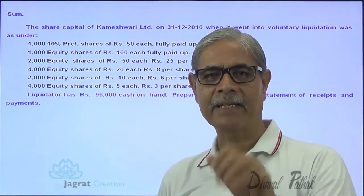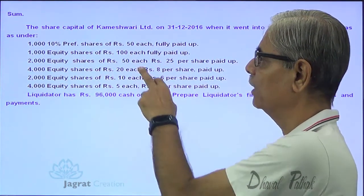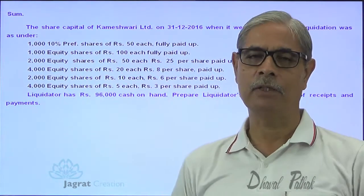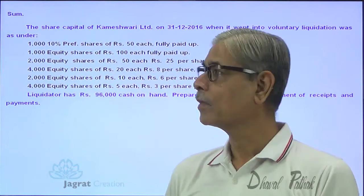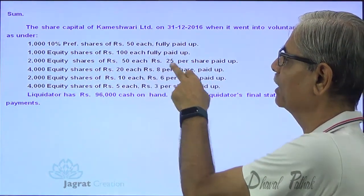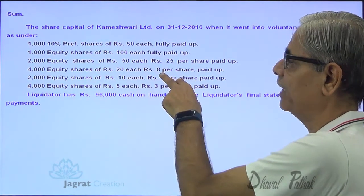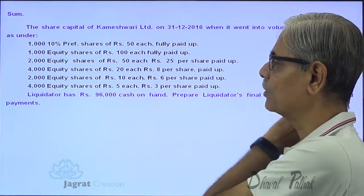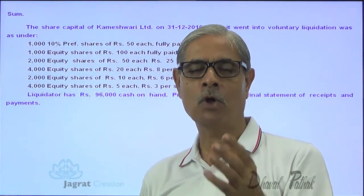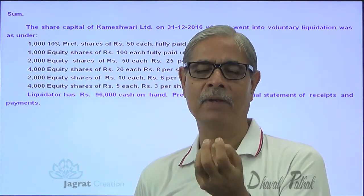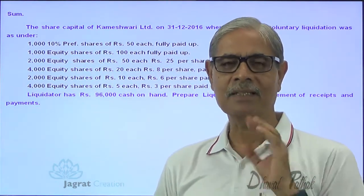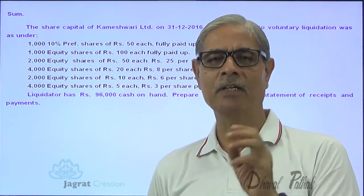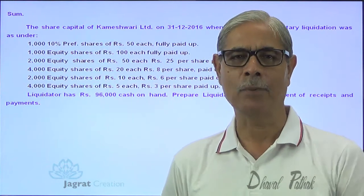There is one preference share and 5 types of equity shares. The first is of ₹100 face value, second is ₹50, third is ₹20, fourth is ₹10, and last is ₹5 face value. Against that, the paid-up amounts differ: the first is fully paid up, the second is 50% paid up, the third is ₹8 against ₹20 (40% paid up), the fourth is ₹6 against ₹10 (60% paid up), and the fifth is ₹3 against ₹5 (60% paid up). So the percentage of paid-up value against face value is also different. Under such circumstances, how equitable accounting of receipts and payments can be made by the liquidator is the important point of focus in this sum.